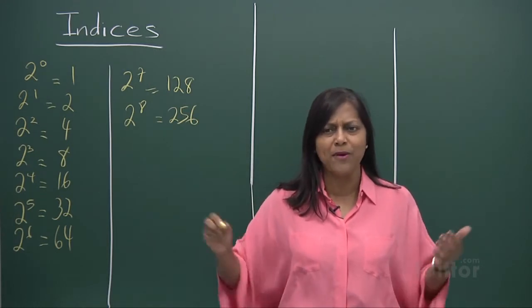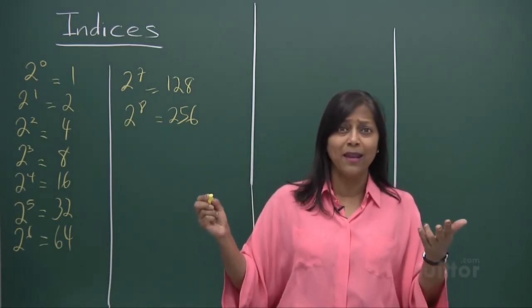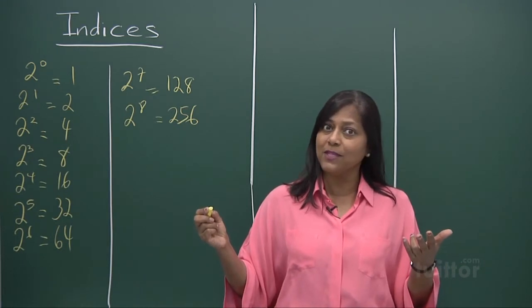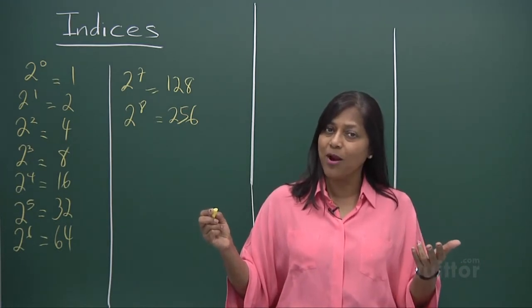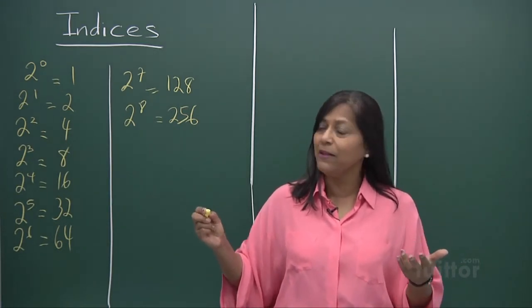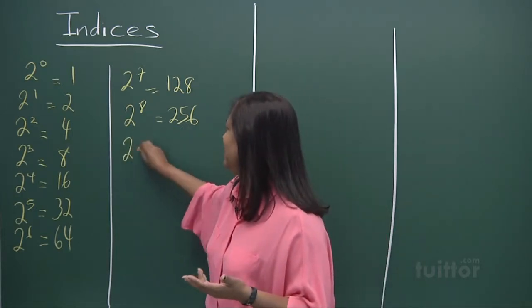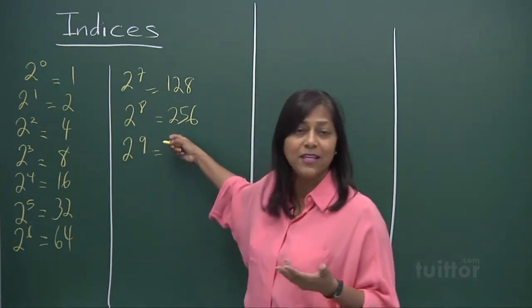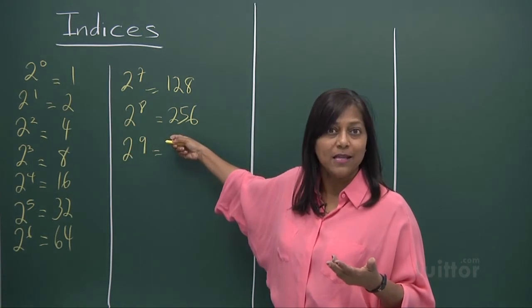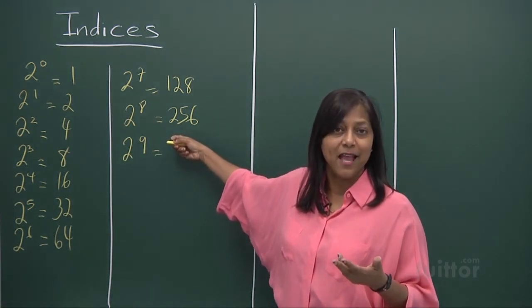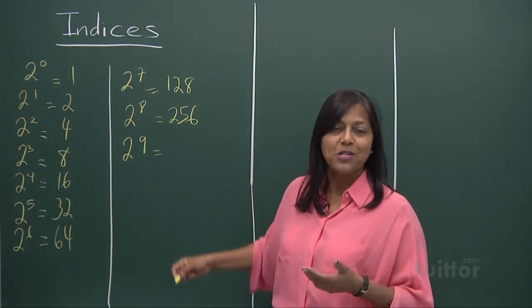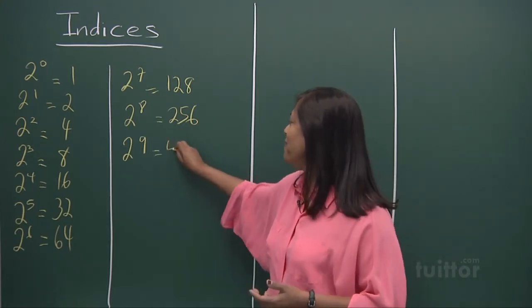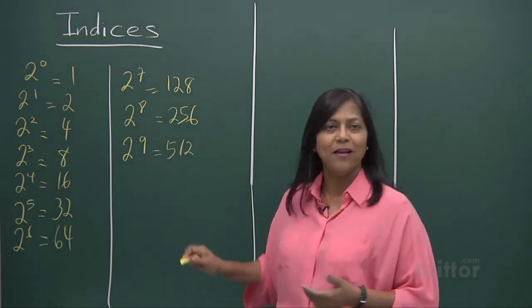Let's look at 2 to the power of 9. Guess what? You got it? Yes, 256 plus 256. A double effect on that is 250 times 2 is 500. A 6 and a 6 is a 12. So you've got 512. Excellent.